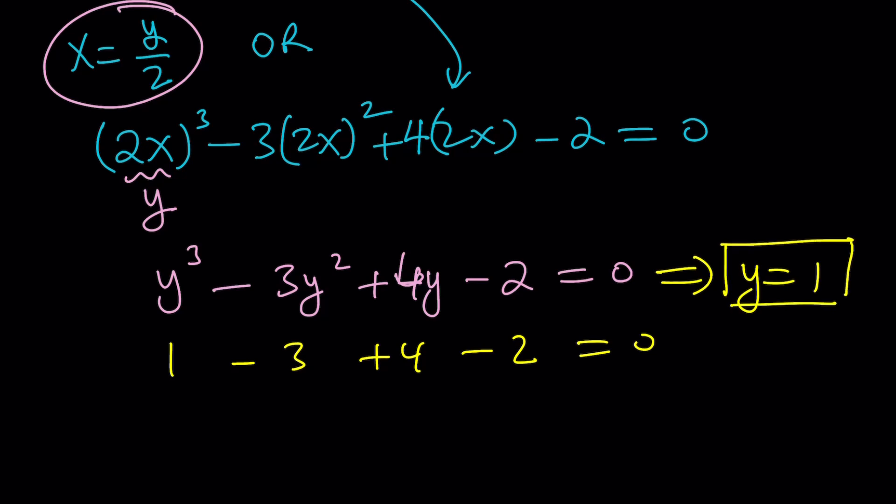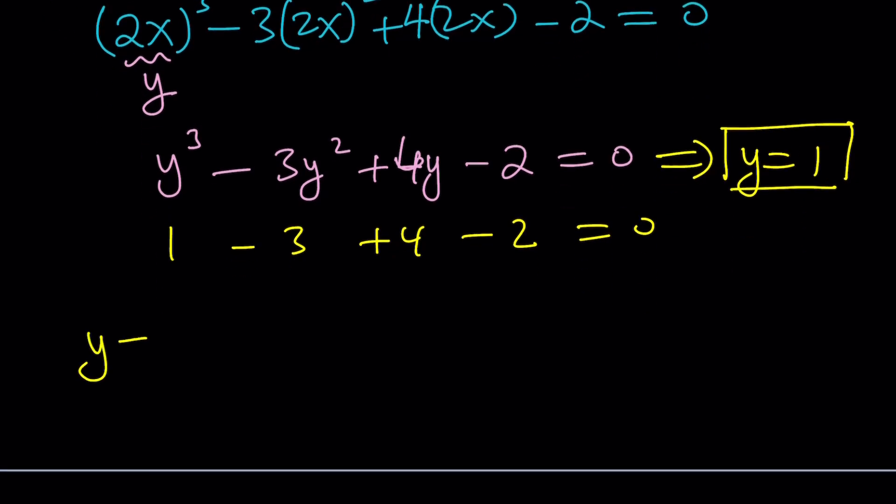y = 1 is a solution means that y - 1 is a factor, so we can use that to find the other factors. And this also means that, because y = 2x, this means x = 1/2. So you could either take the polynomial in y and divide by y - 1, because this implies y - 1 is a factor. That is the factor theorem.